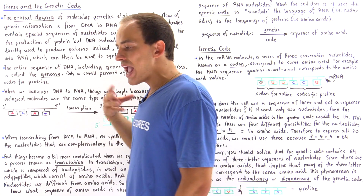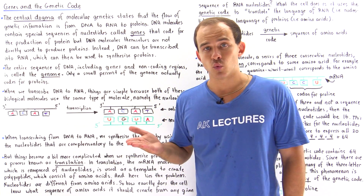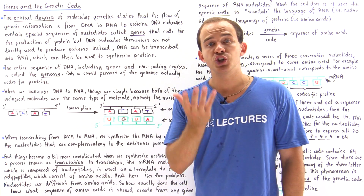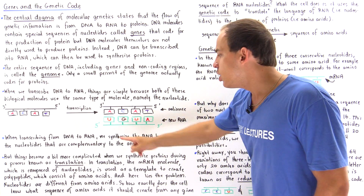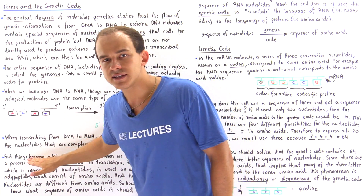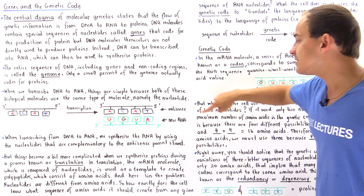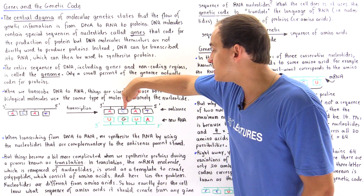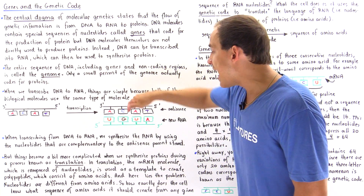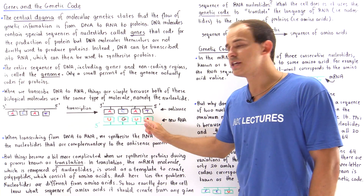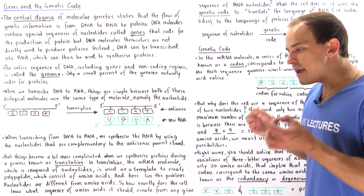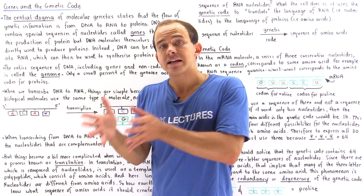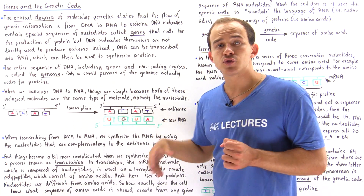The method by which we transcribe is simple because the language used by RNA and DNA is exactly the same — both use nucleotides. When transcribing from DNA to RNA, we synthesize RNA using the nucleotides complementary to the antisense DNA strand. So if the DNA has A, the RNA gets U; if C, then G; if A, then U; and if T, then A. In the nucleus, the cell has no problem transcribing from DNA to RNA because all it has to do is find the complementary nucleotide.